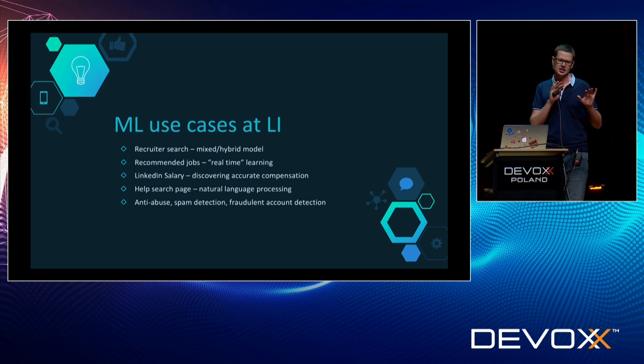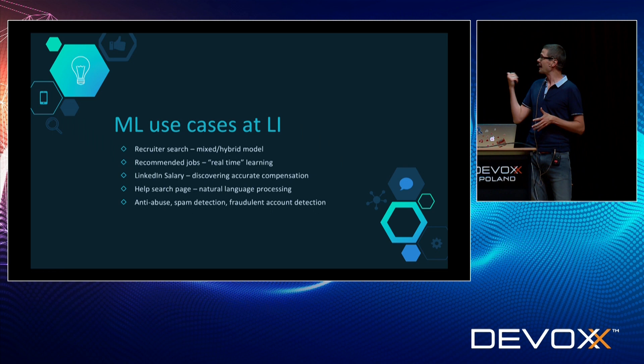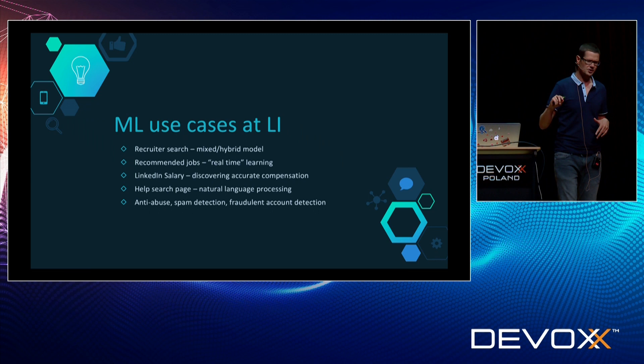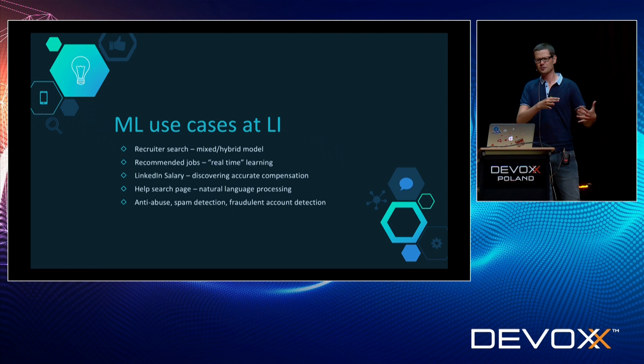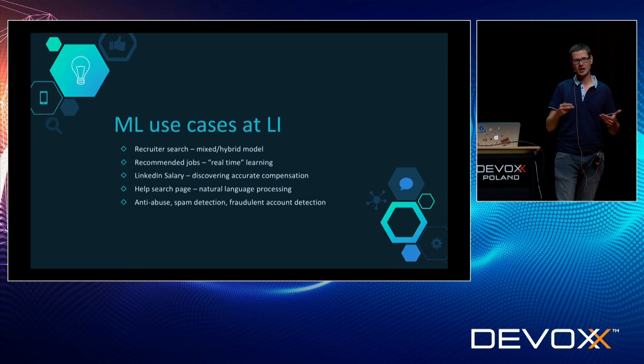I'm going to dive deeper into specific use cases. Each one I'll cover at a high level, and for each there are recent blog posts on the LinkedIn engineering blog where you can dive deeper. Except for the last one — anti-abuse and spam detection — it's not super smart to publicly explain how you do your security. But definitely we use machine learning there as well.